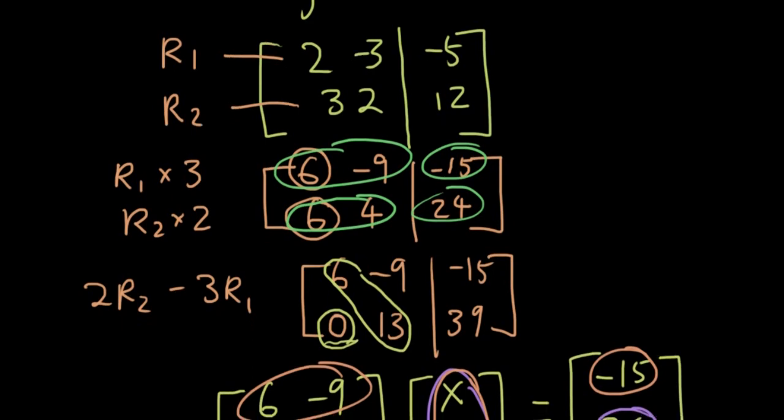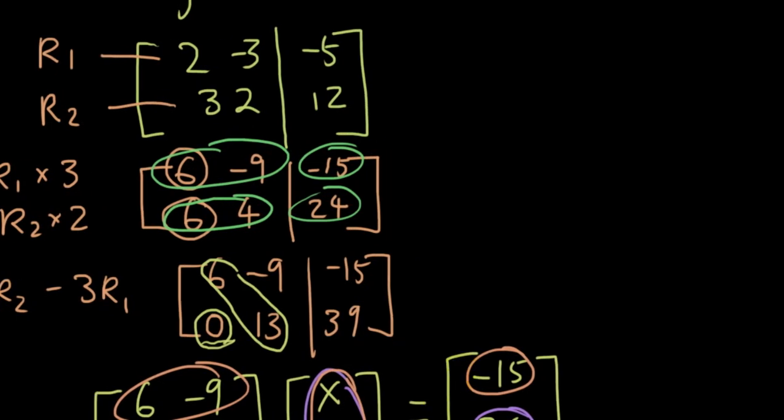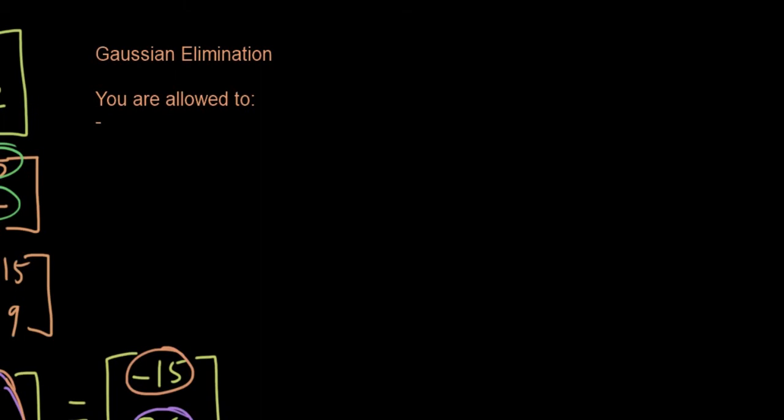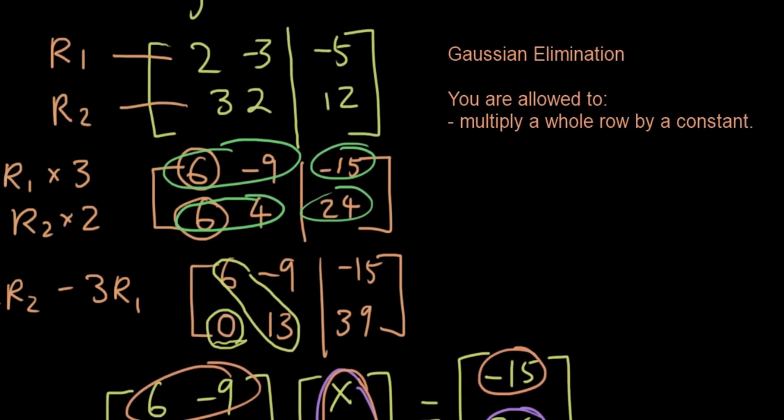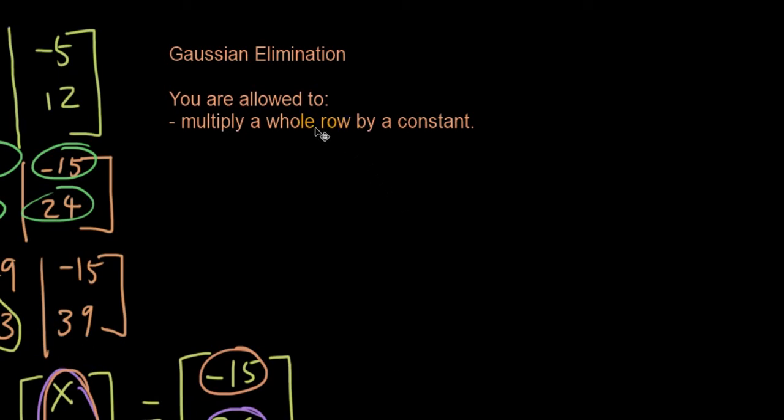So we've solved this equation after doing a bit of Gaussian elimination first. So what do we actually have to do for Gaussian elimination? So let's write down a bit of a summary. So for Gaussian elimination, you are allowed to, number 1, multiply a whole row by a constant. So that's what we did over here. We multiply row 1 by 3 and we multiply row 2 by 2. So each row can be multiplied by a different constant.